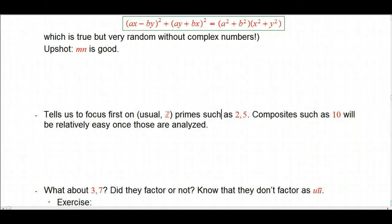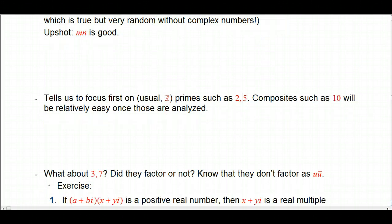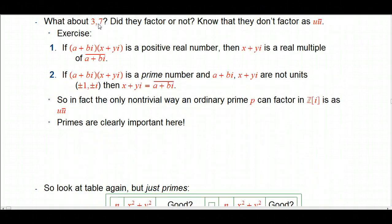So from now on, we're pretty much going to say I've got a prime number, an ordinary prime integer. Can it be expressed as the sum of 2 squares? So there's another piece of unfinished business from the numerical examples. That was about 3 and 7. What we know is just by very simple trial and error that they're not the sum of 2 squares. So in terms of Gaussian integers, that says they don't factor in this special way as a number times its conjugate, like u u bar.